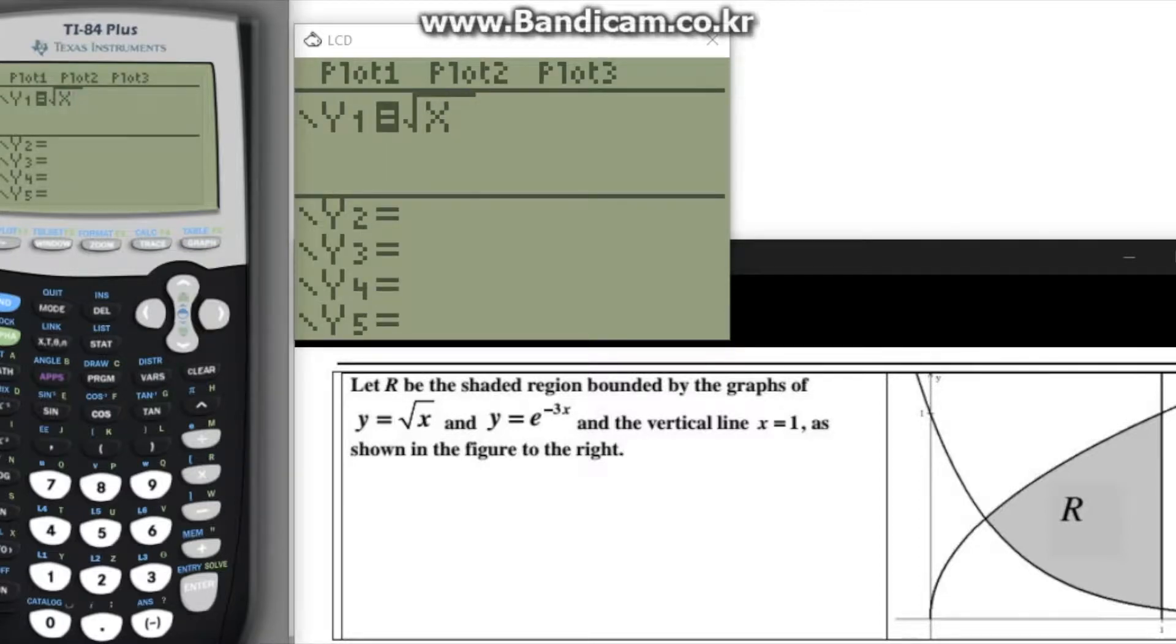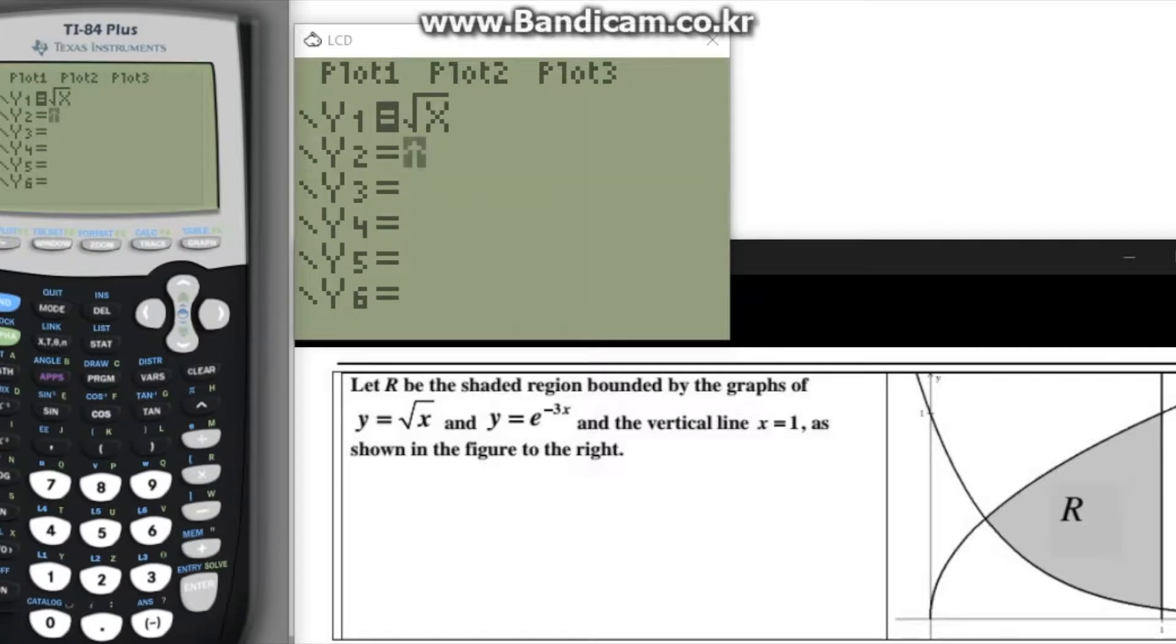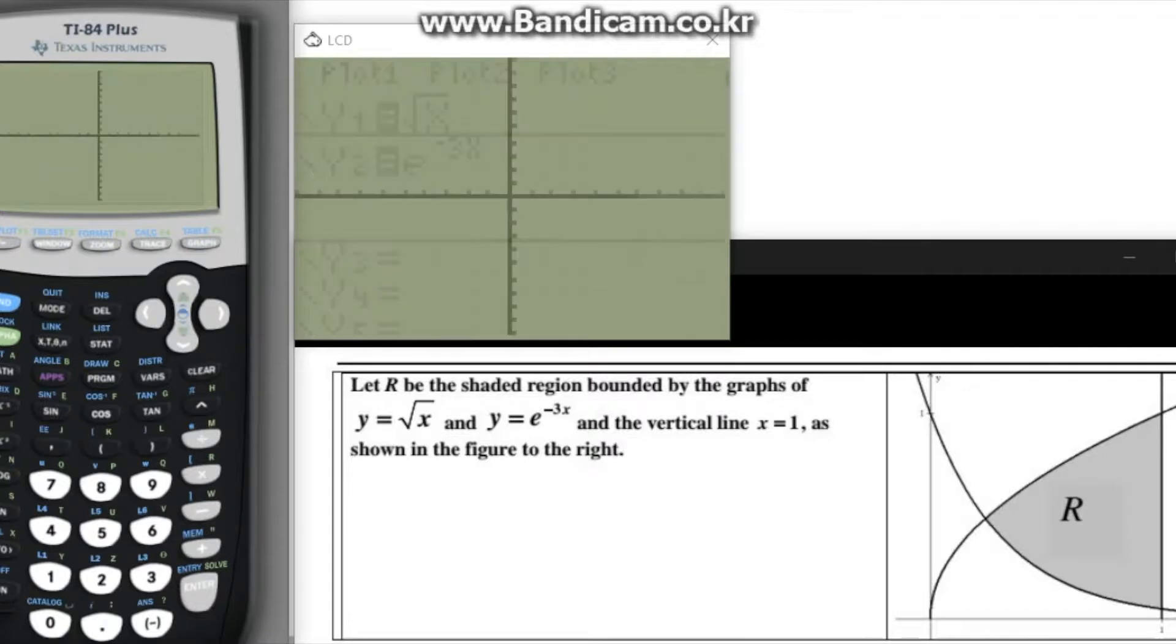So on our calculator, we begin by pressing the y equals button and we enter both equations next to the y1 equals and y2 equals display on the screen and press graph to graph both the equations.